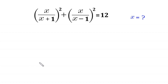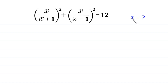Hello, welcome to how to solve this very nice algebra equation. The equation is: x over (x plus 1) whole squared plus x over (x minus 1) whole squared is equal to 12. We need to find all possible values of x.